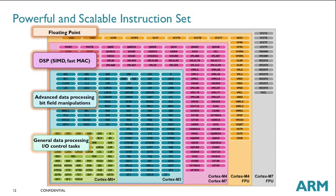If your application is focused on digital signal processing, the single instruction multiple data capabilities of the Cortex-M4 and Cortex-M7 will prove useful. The DSP performance differences between Cortex-M4 and Cortex-M7 will be highlighted later. In addition, both Cortex-M4 and Cortex-M7 support fast floating-point operations. The Cortex-M4 has an optional single-precision floating-point unit, while the Cortex-M7 offers the option of either single-precision only, or both single and double precision floating-point units.